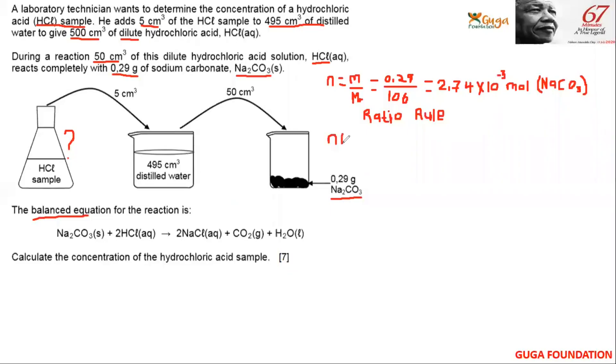Which means that the number of moles n of HCl will be equal to the moles of sodium carbonate multiplied by 2. So n of HCl equals 2 times 2.74 times 10 to the negative 3 moles, which gives you 5.47 times 10 to the negative 3 moles for HCl, for the diluted one.